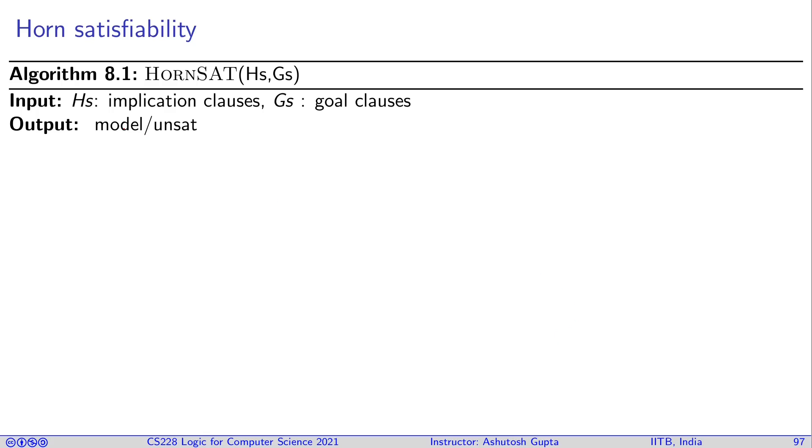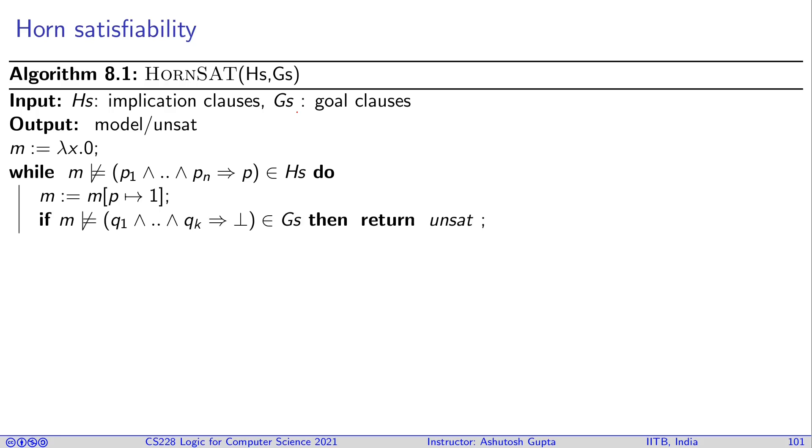Suppose you have implication clauses and goal clauses. Initially, put all variables to zero. Then pick one implication clause which is not yet satisfied by your current model. This can happen when all the left-hand side literals p₁ to pₙ have been made true, but p was not made true. Then you set p to true and move forward. In this process, if at some point all the literals in the left-hand side of a goal clause become true, you have found UNSAT. Otherwise, you continue.